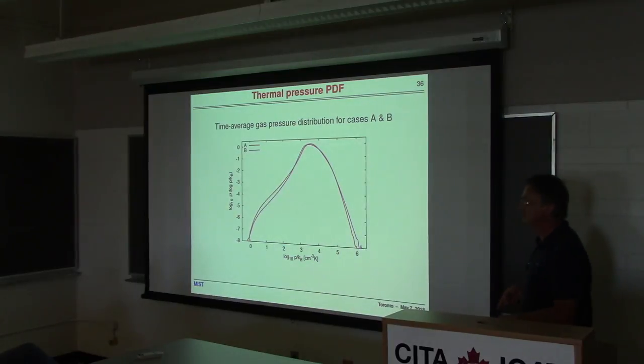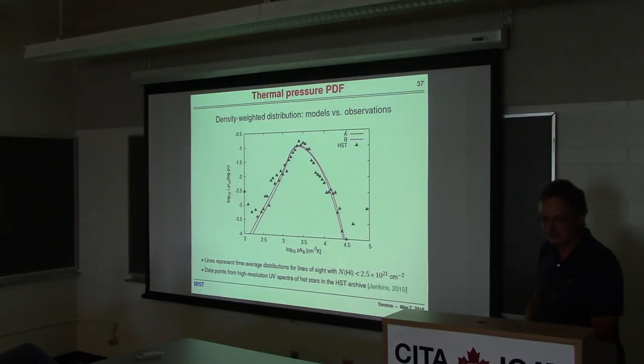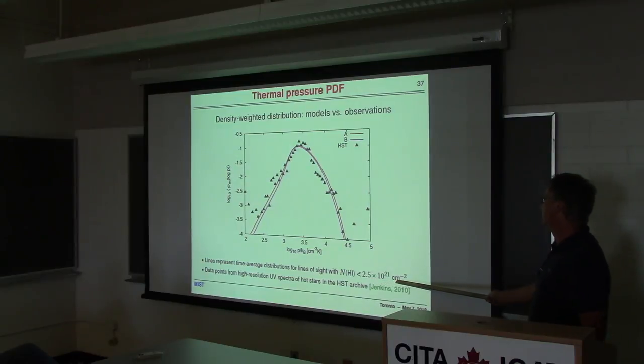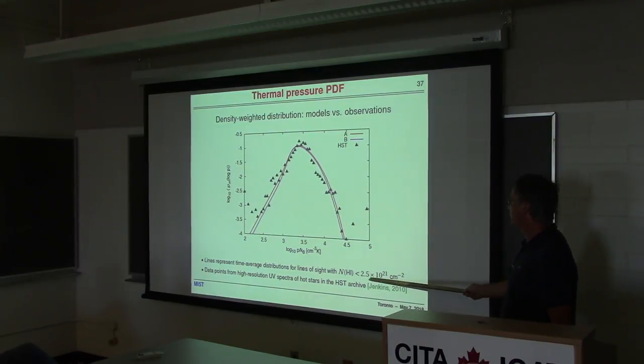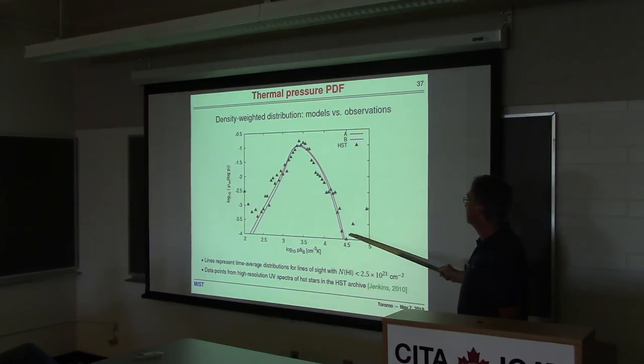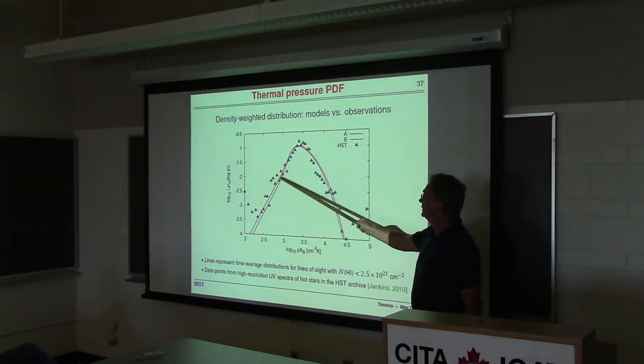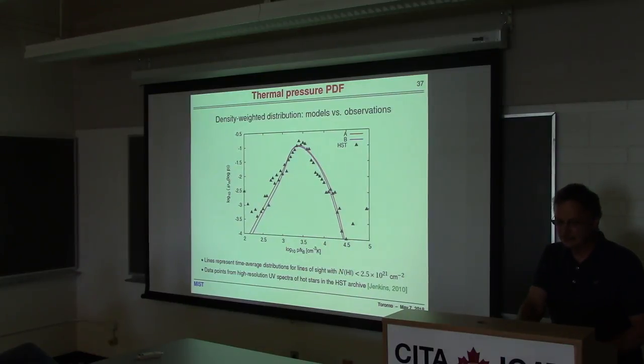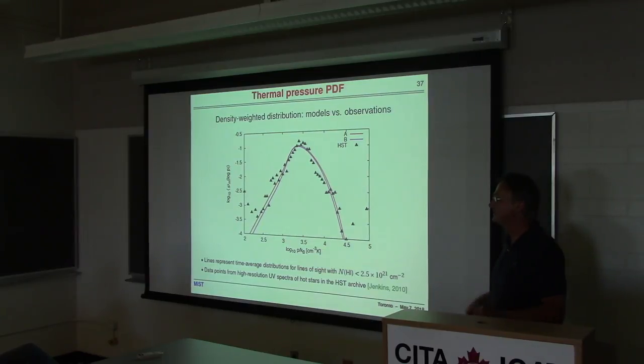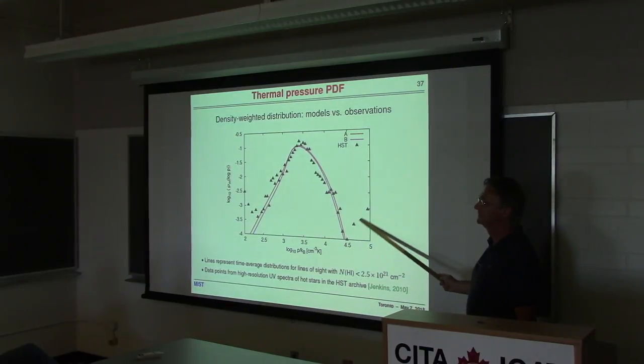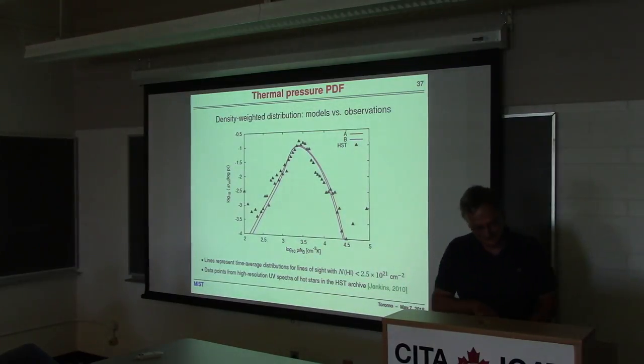This is the pressure distribution from cases A and B - it's huge, six orders of magnitude. We can never see that in real ISM because we mask regions. When we mask the way observations tell us - ignoring everything with column density more than 2.5 times 10^21 cm^-2 - we get very nice correspondence to HST archival observational data. We put three parameters in and get a nice distribution with the right shape.